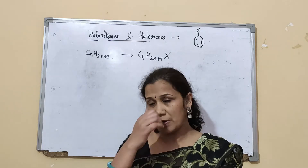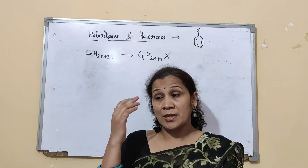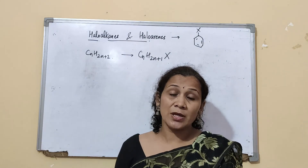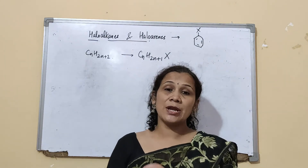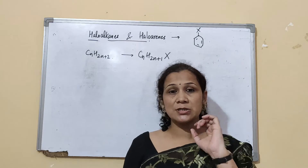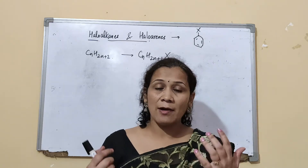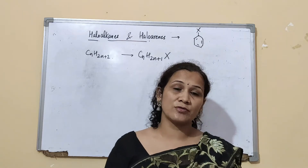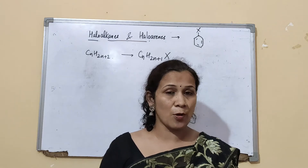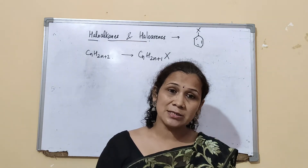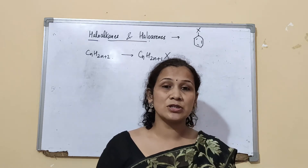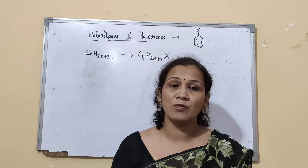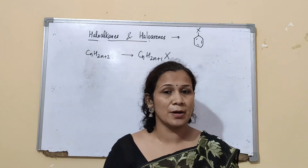Coming to chemical properties, we will discuss the reactions, the nature of chemical reactions, the nature of bond, the general mechanism of reactions, how they react, and what is the polarity of the carbon involved. Then there was a topic known as polyhalogen compounds in this chapter, but because it is now eliminated, we won't be doing polyhalogen compounds.